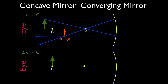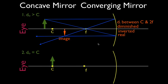Based on that ray diagram, when the object is beyond C, the image will always be somewhere between C and F. The image will always be smaller than the object, always inverted, and always a real image — created by converging light rays that cross at that point. To recap: the first ray is 'parallel then through F,' and the second ray is 'through F then parallel.' They are opposites of each other.